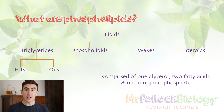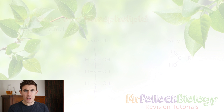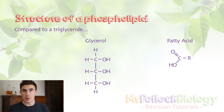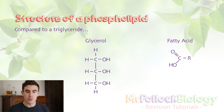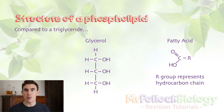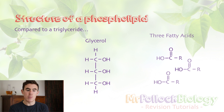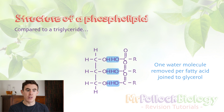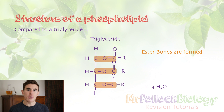Let's look at that in more detail and compare phospholipid structure with triglyceride structure. If we take the structure of a triglyceride — which we did last video — here's our glycerol and our fatty acids, shown with an R group to represent the hydrocarbon chain that varies from fatty acid to fatty acid. Three fatty acids undergo a condensation reaction with one molecule of glycerol to form three molecules of water, giving us three ester bonds which form our triglyceride.